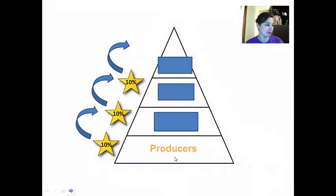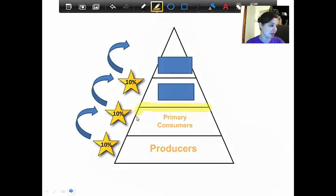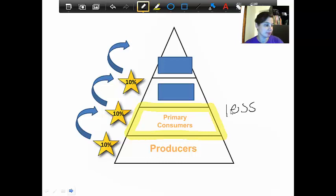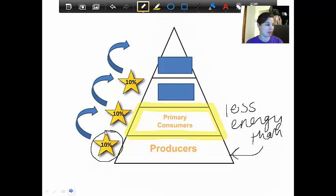For the next level, you could probably guess what the next level up is: those are our primary consumers. Let me point out to you that the size of this level is important. This one is a little bit smaller, a little less wide than the producers down below it. So that means that in this level, we have less energy than our producers. We've lost some energy in the process. Now we can look at these stars on the side. What this star says is that there's 10% of the energy that gets passed on from the producers to the primary consumers.